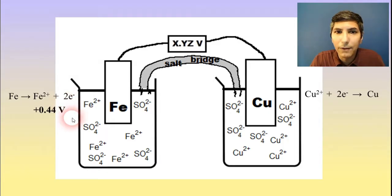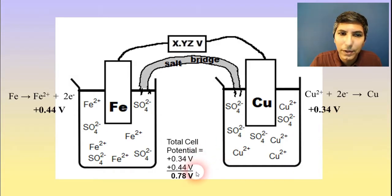Now, this half reaction, in fact, every half reaction has a voltage associated with it. So, for example, this iron half reaction has a voltage of plus 0.44 volts. And this half reaction, the copper being reduced, has a voltage of positive 0.34 volts. So if you want to know the total overall voltage of the battery, we just have to add these two together. And so the total cell potential or the total voltage that's going through the wire here is 0.78 volts.